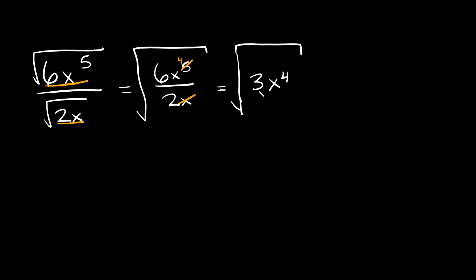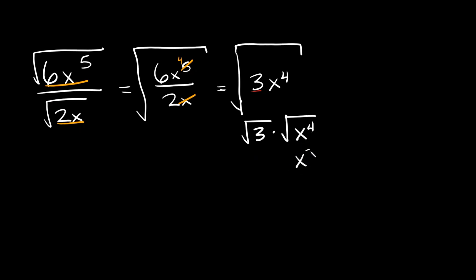Now when you're left with basically a number and a variable, all you have to do is split these into two different radicals. So the square root of 3x to the fourth you can break down into the square root of 3 times the square root of x to the fourth. The square root of 3 we can't break down anymore, but the square root of x to the fourth we can simplify.